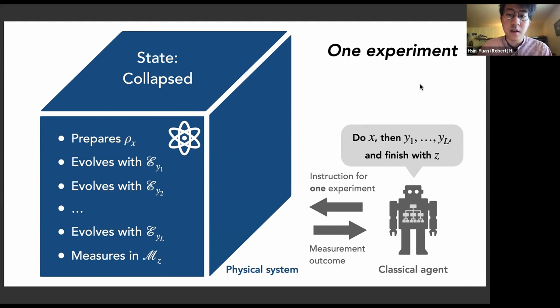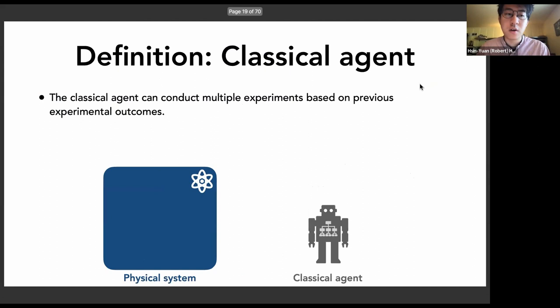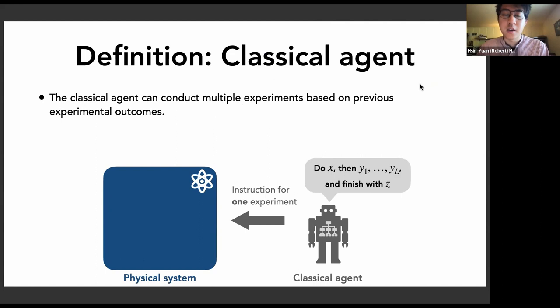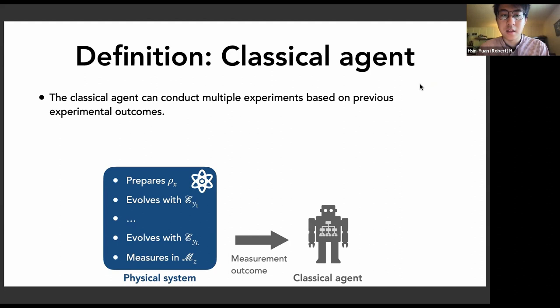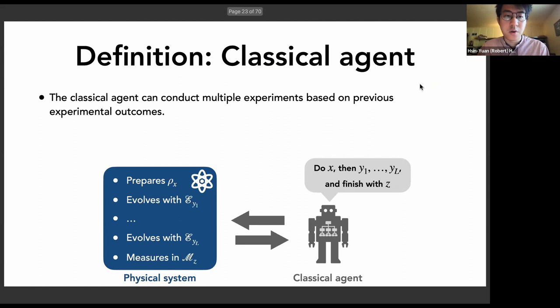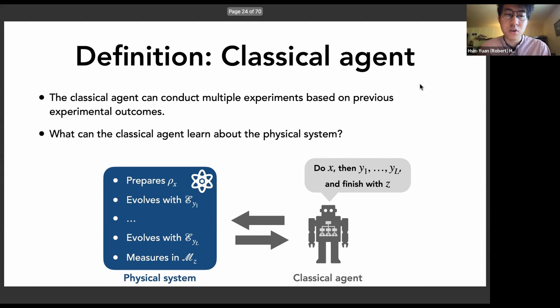That's what we define as performing one experiment. Typically, the measurement outcome is stochastic even if you run the same experiment multiple times. More generally, the classical agent can conduct different experiments — specifying an instruction, obtaining the outcome, and based on that outcome choosing what experiment to run next, then repeating. After multiple rounds, the classical agent starts to build knowledge about what the physical system is and what's happening inside it.